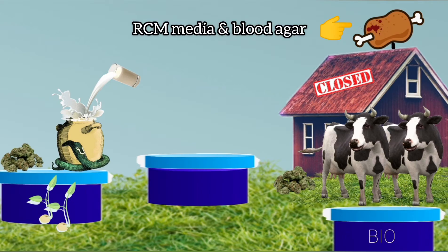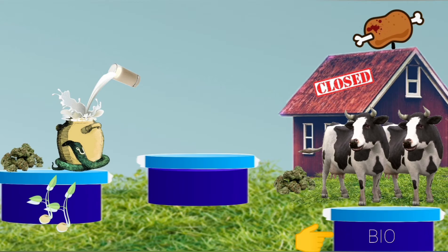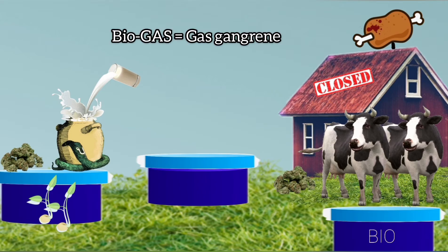From the meat sign, Robertson's cooked meat broth and blood agar. The biogas plants have been specifically used in this mnemonic because Clostridium welchii causes gas gangrene.